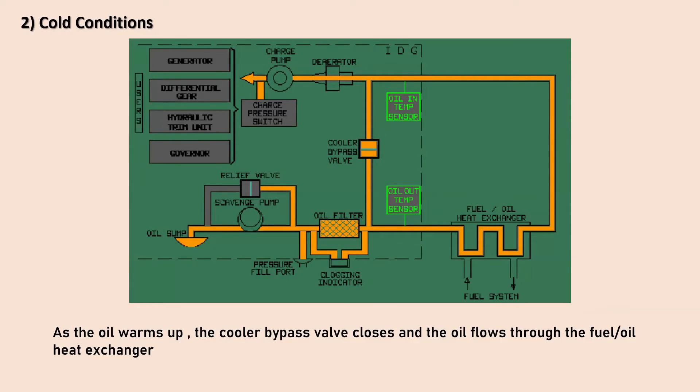To deal with this, the cooler bypass valve steps in. When the pressure rises due to the thickened oil, this valve opens up, creating a shortcut for the oil to flow through the IDG internal circuit. It's like finding a detour on a busy road to avoid traffic. By taking this shortcut, the oil can flow more easily, ensuring the IDG keeps running smoothly even in cold conditions. When it's cold and the oil thickens, the bypass valve opens to give the oil an easier path through the IDG.